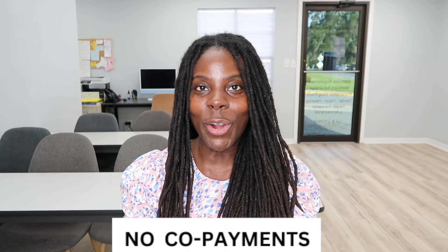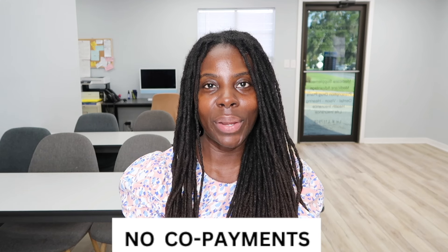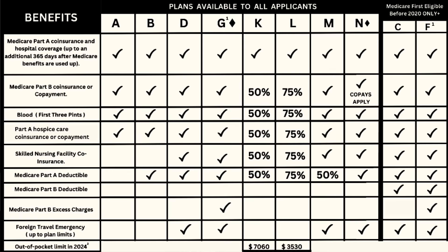The supplement pays the 20% that Medicare leaves behind, and there are no co-pays — all you pay is your monthly premium. Looking at the coverage chart: Part A co-insurance and hospital coverage is covered at 100%. Part B co-insurance and co-payment is covered at 100%. Your first three pints of blood are covered at 100%. Part A hospice care co-insurance and co-payment is covered at 100%. Skilled nursing facility co-insurance is also covered. The Medicare Part A deductible is covered, but the Medicare Part B deductible is not covered.